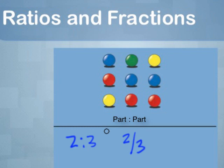But a fraction is a ratio of a part to the entire collection. It's a part-whole ratio. Let's find the fraction of yellow marbles that there are in this collection. We know there are two yellow marbles, and we can count the total, which is 9 marbles.